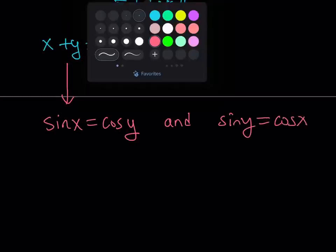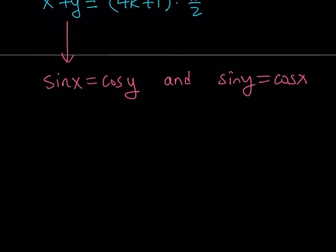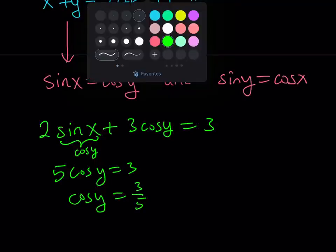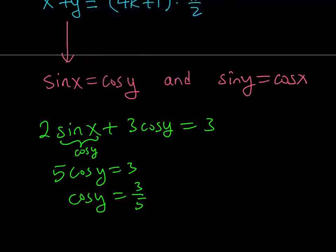Now, we're going to use the original equations now. Our original equations were 2 sine x plus 3 cosine y is equal to 3. Now, in this equation, if you go ahead and replace sine x with cosine y, you get 5 cosine y is equal to 3. And that gives you cosine y is equal to 3 fifths.